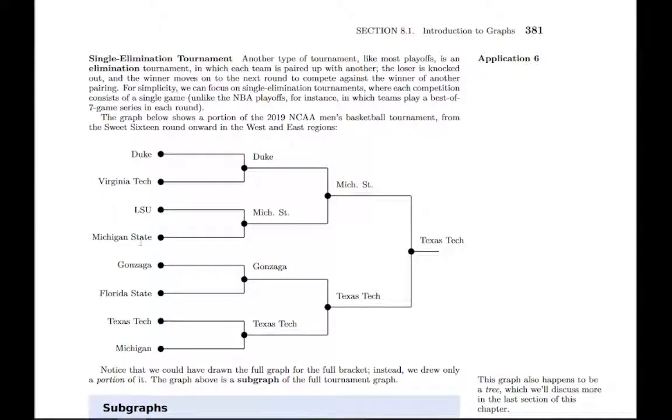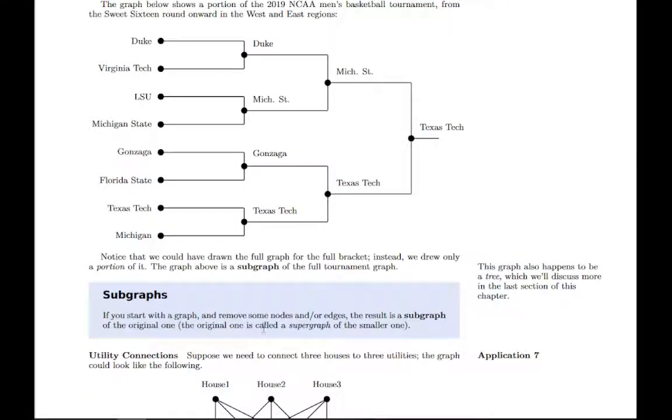Then we have another example here of a single elimination tournament. This comes from the NCAA basketball tournaments of 2019, a section of the full bracket. This is a graph where we have edges describing games that are played and nodes describing teams as they advance. This is just a part of the full graph. We use the term subgraph to mean a piece of the whole. It also happens to be what's called a tree, which we're going to get into at the end of the chapter.